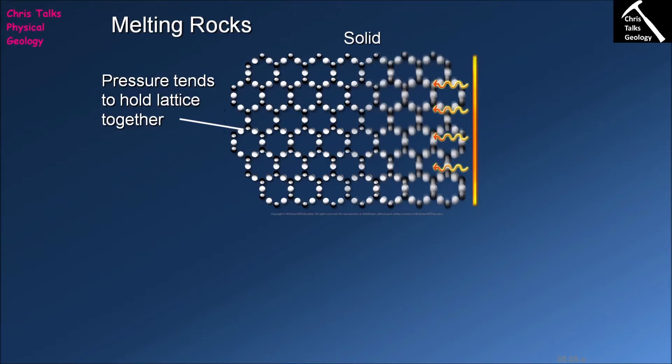As soon as we break some of the bonds, it means that parts of the mineral can start moving relative to each other, and once the constituents of the mineral start moving relative to each other they've essentially transitioned from being a solid — where everything is locked together rigidly — to a liquid where things can move past each other.